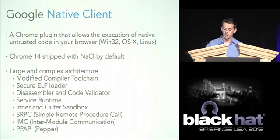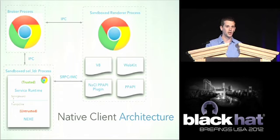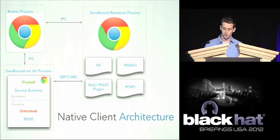I have an architecture diagram I'll bring up before each section. In the top right is the sandbox renderer process — where WebKit, the V8 JavaScript engine, and the Pepper implementation live. Bottom left is the sandboxed secure loader service runtime, where untrusted modules live. Top left is the Chrome broker process, the more privileged process that handles requests from unprivileged components. The section being discussed will be highlighted in red.